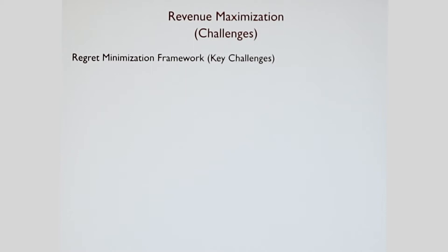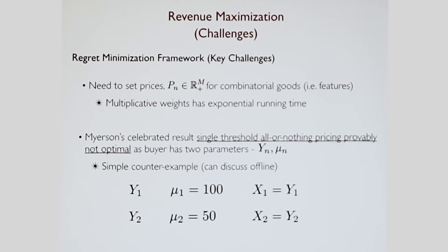What are the key challenges of applying something like multiplicative weights in our framework? Let's say you set prices for each different feature. These are combinatorial goods. Because they're combinatorial goods, something like multiplicative weights is going to have exponential running time. That's not good, it's not feasible again. Another issue is that Myerson's celebrated result says if you have a single parameter and a single item, then a single threshold, all or nothing pricing is the best thing to do. In our case, it's distinctly not the best thing to do. The reason is that a buyer has two parameters: YN, which is the prediction task, and muN, which is their valuation for accuracy.